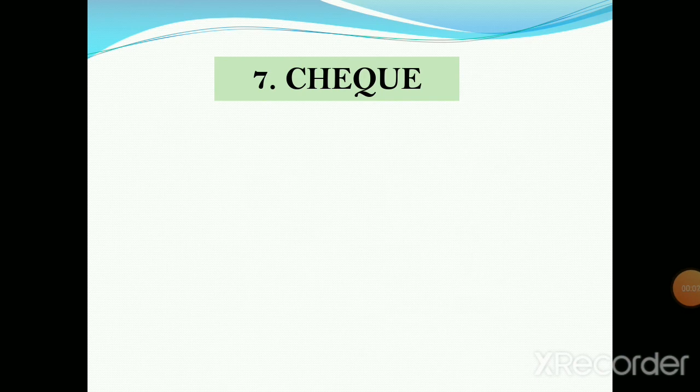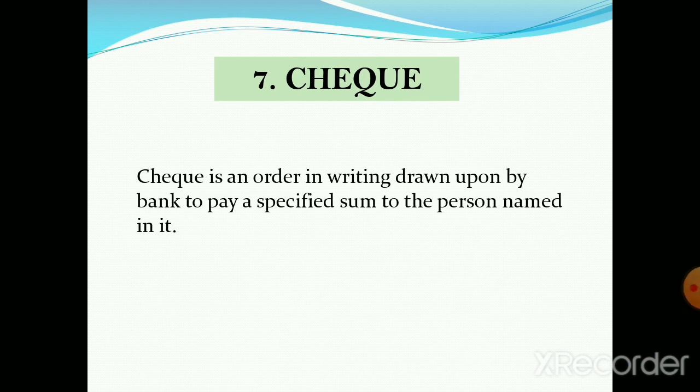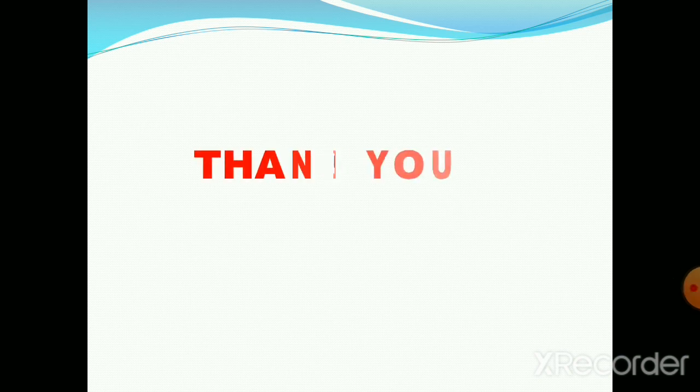The last source document is cheque. A cheque is an order in writing drawn upon a bank to pay a specified sum to the person named in it. Each cheque has a counterfoil in which the same details as entered in the cheque are filled, and this counterfoil remains with the account holder for future reference. We have learned all the types of source documents in this session, and we'll continue with more topics in the next session.